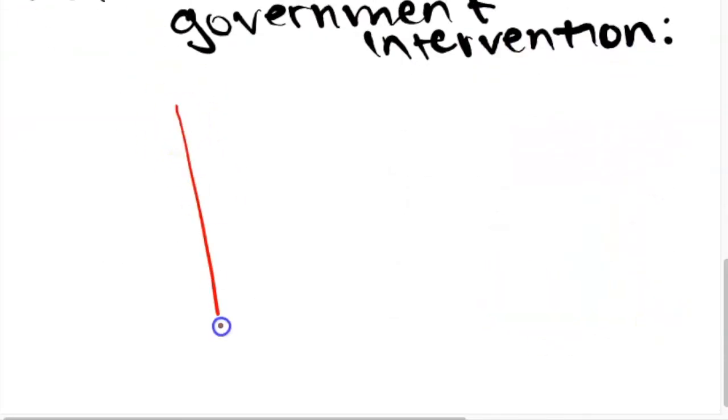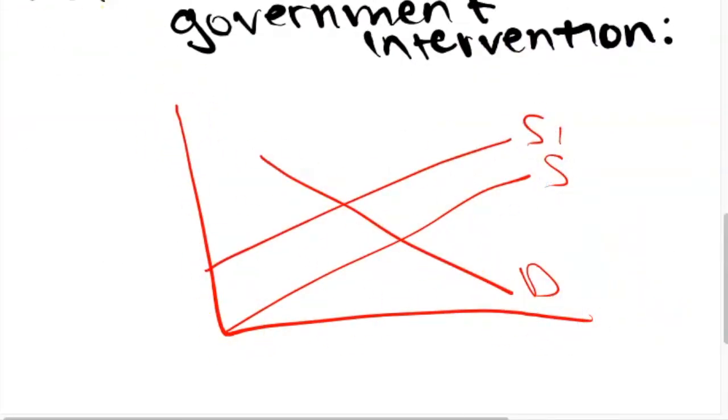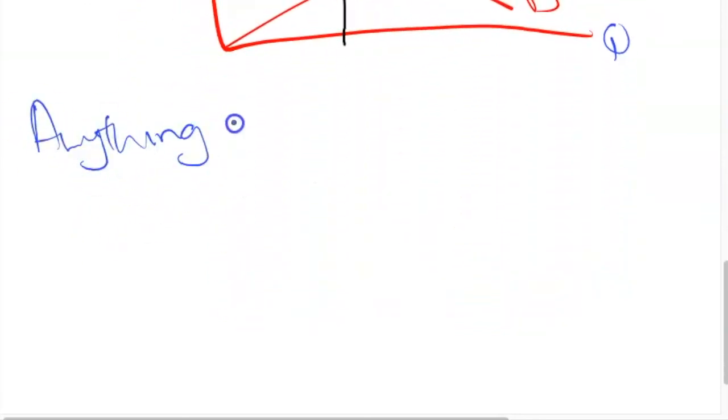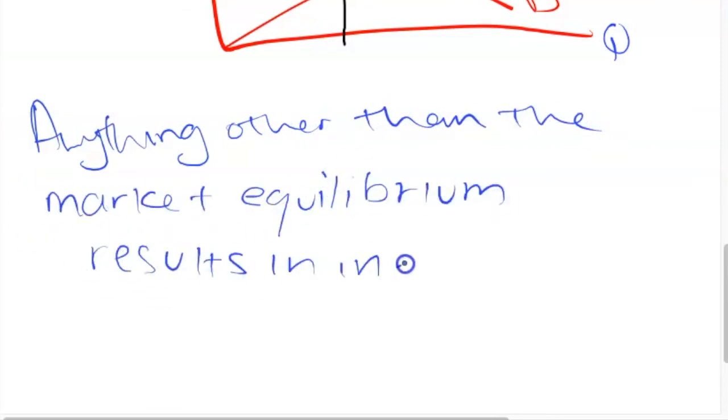But in situations where the government intervenes, we often see that allocative efficiency is lost because we're no longer producing at the market equilibrium. So for instance, in the situation of a tax, this results in higher cost of production for the firm. So the supply curve shifts from S to S1 and this creates a welfare loss, a loss in both consumer surplus and producer surplus, meaning that we're no longer allocatively efficient, nor are we producing at the optimal price and quantity. We also say that things like subsidies and taxes distort the price mechanism and price's signaling function because it makes price actually seem different than the marginal benefit that is attributed to these products by consumers.